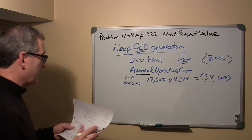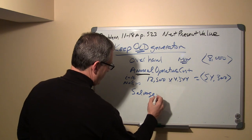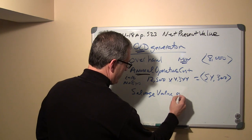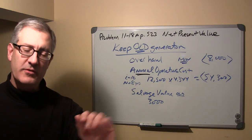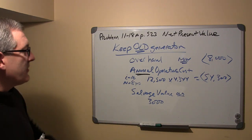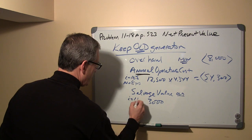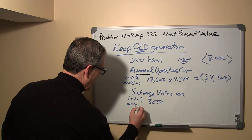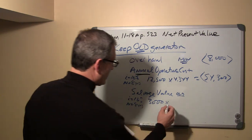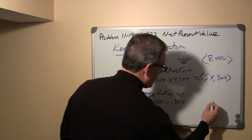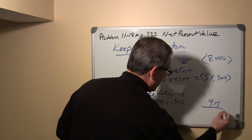The last cash flow is the salvage value of the old generator at the end of the eight-year period: three thousand dollars. It happens only once. We need the present value of that single sum: sixteen percent, eight periods, factor of 0.305, giving a present value of nine hundred and fifteen dollars.